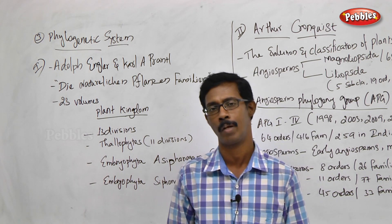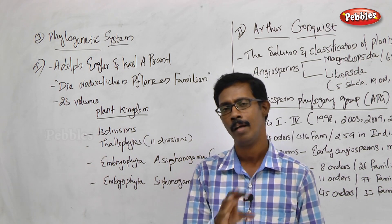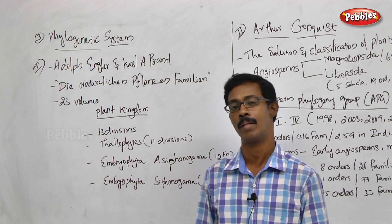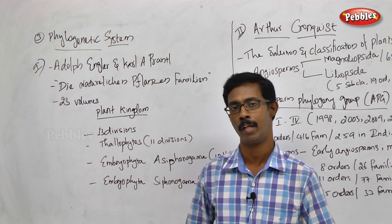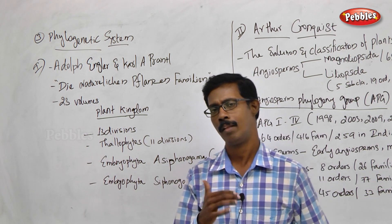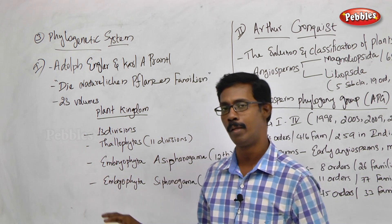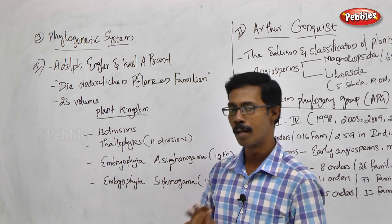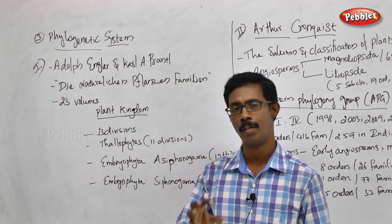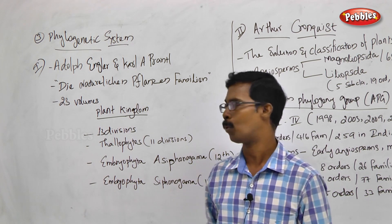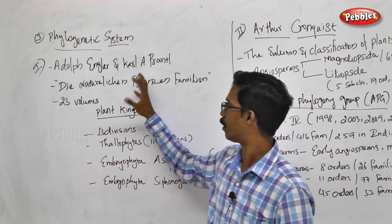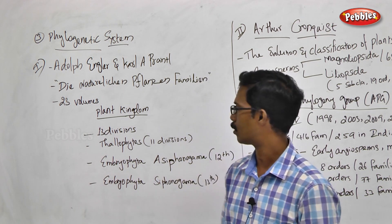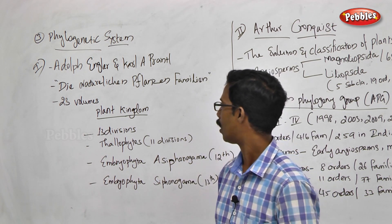Multiple characters are used. They are using external morphological characters as well as phylogenetic information, which can be included in the classification. This is going to improve and refine the classification system. This is Adolf Engler's system of classification.